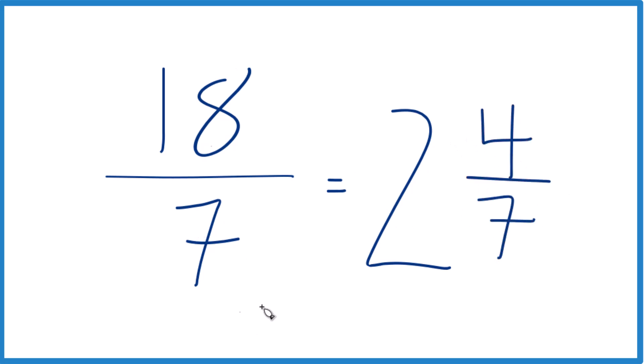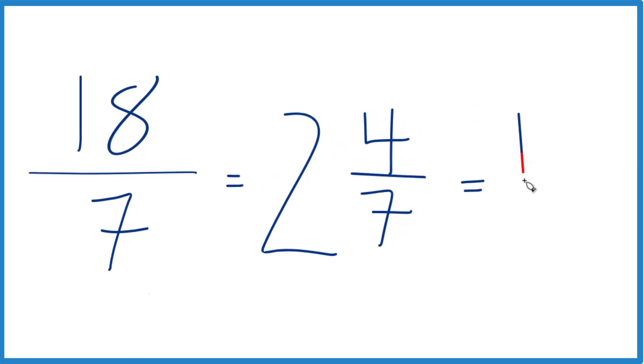And 18 sevenths, that's the same as 2 and 4 sevenths. And you can check that. 2 times 7 is 14, 14 plus 4, that gives you 18, and keep the 7 across the same. That's what we started with.